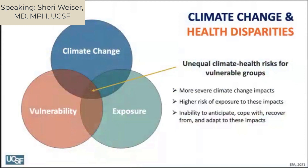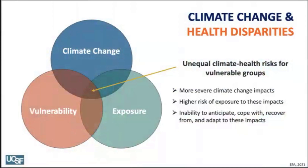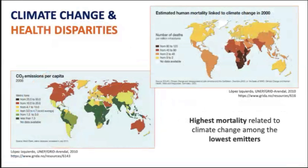Climate change drives significant health disparities among marginalized populations such as low-wealth communities, people of color, migrant populations, and the elderly. This is referred to as the climate gap. These populations have contributed least to climate change but suffer first and worst from the negative health impacts. They have a higher likelihood of exposure to climate hazards due to racial, economic, and other injustices — more likely to live in low-wealth areas prone to extreme heat or flooding — and have a lower ability to anticipate, cope with, and adapt to these impacts.